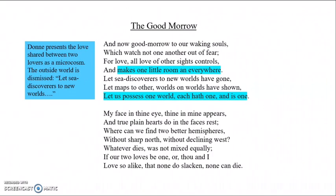At the end of this stanza, Donne writes, 'Let us possess one world, each hath one and is one.' By this, Donne means that the lover he is addressing is everything to him — therefore she's a kind of world. Similarly, he's everything to her, and therefore he's a kind of world to her. Both lovers are worlds for each other and have worlds in each other.